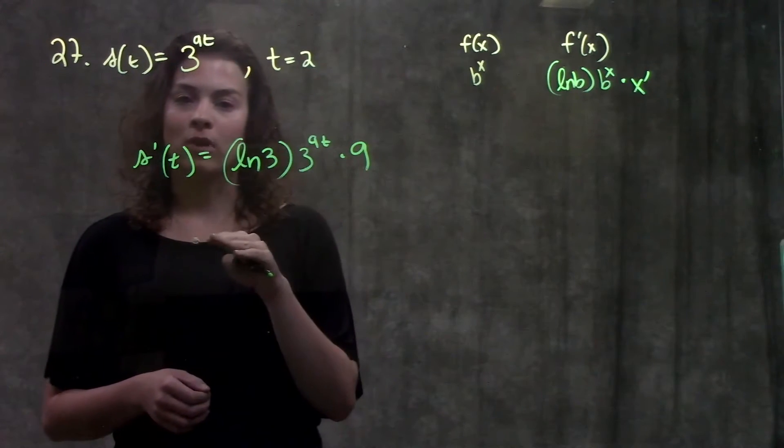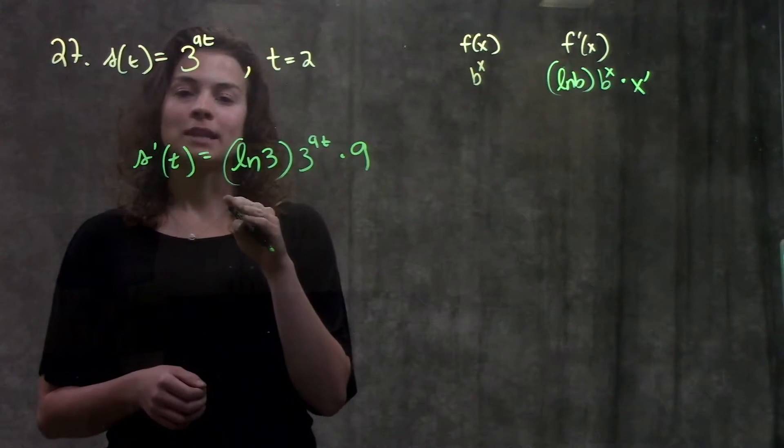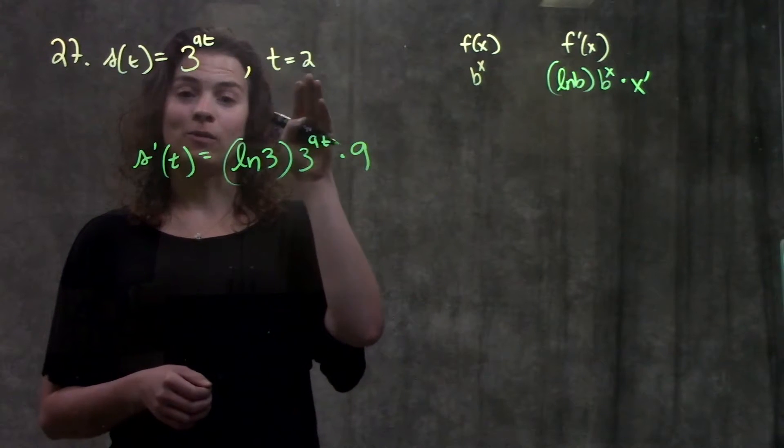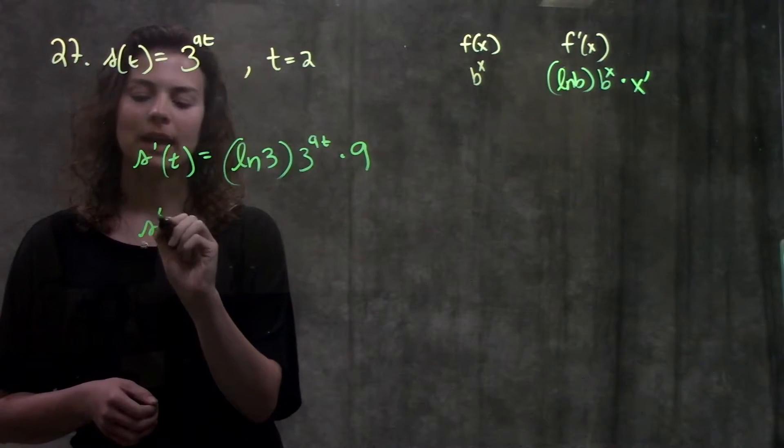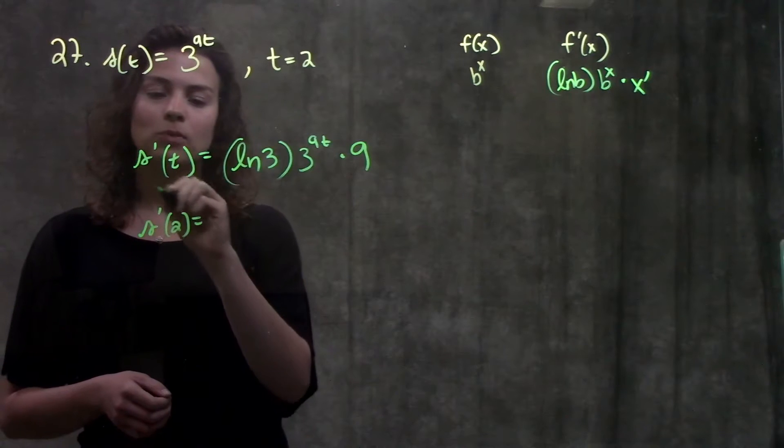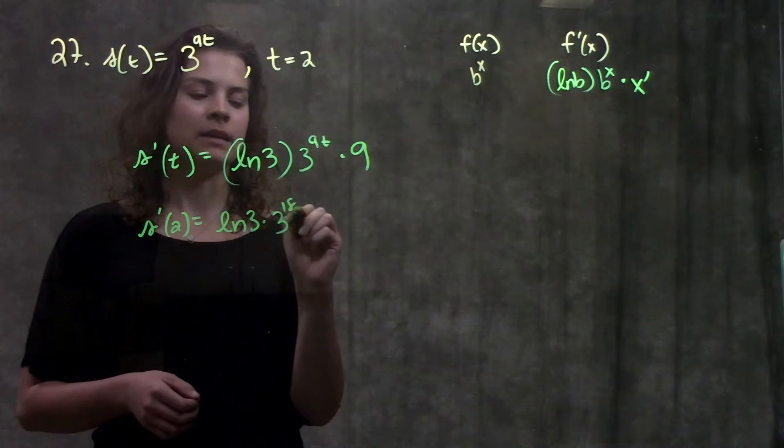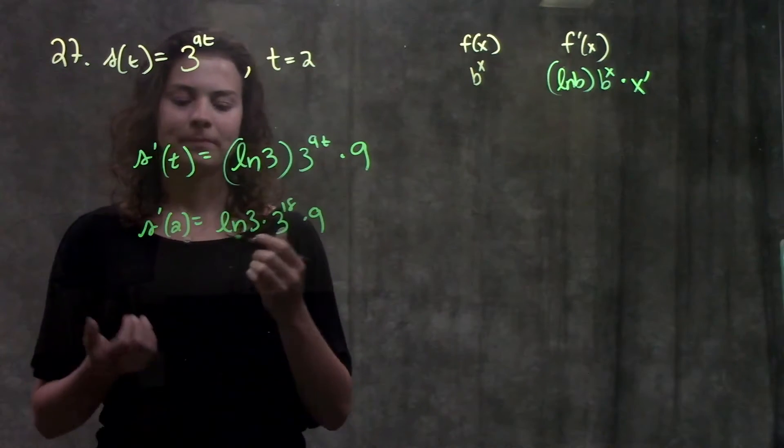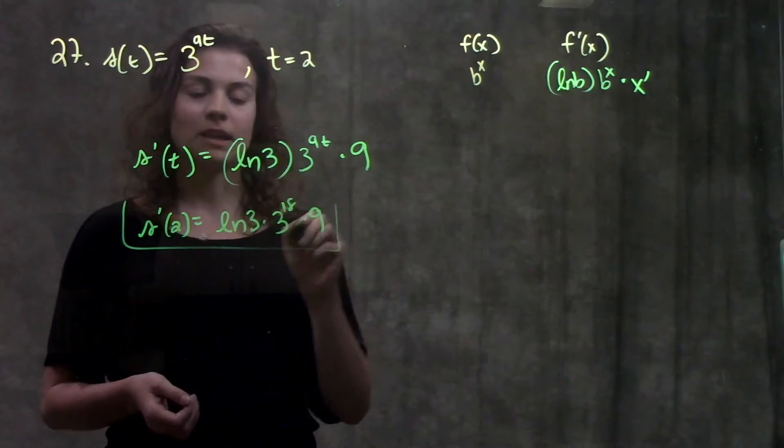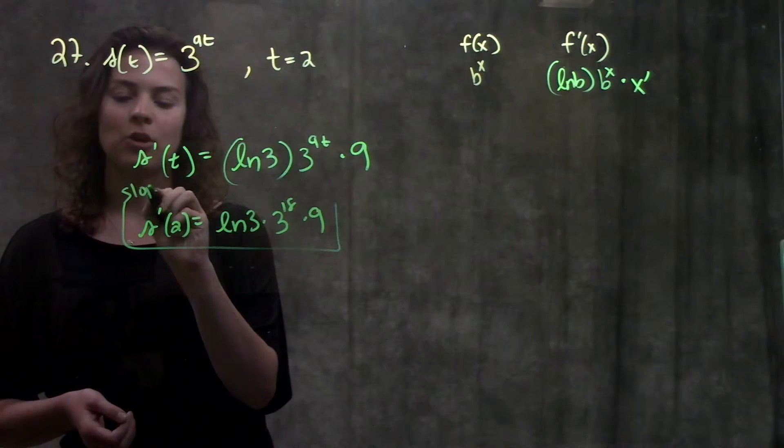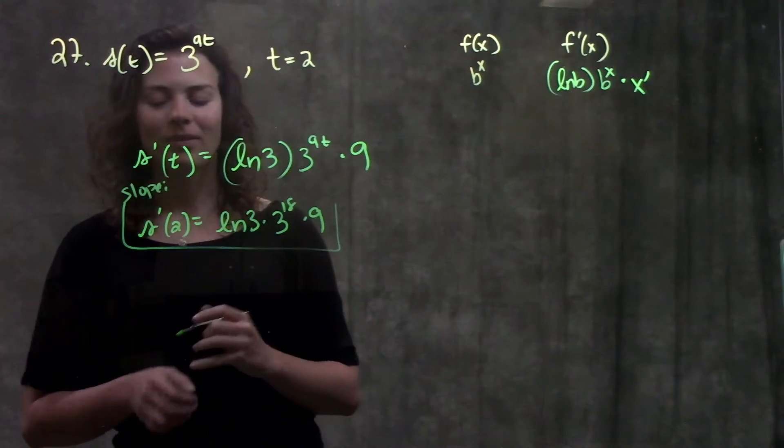Here's my general form of the slope, but I'm interested in the slope at the value t equals 2. So now I'm going to plug in 2 into my derivative function. I get ln of 3 times 3 to the 18 times 9. I'm just going to leave it like this. This is the slope of my tangent line.